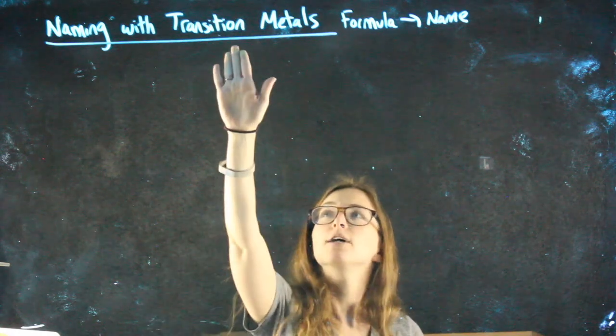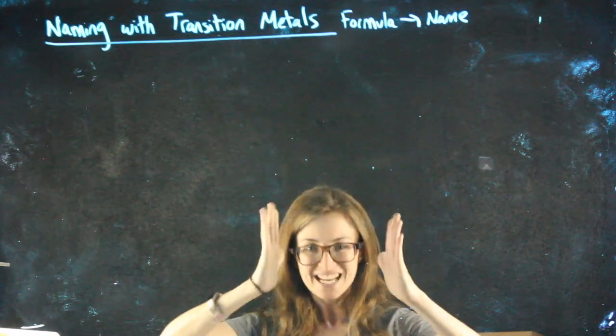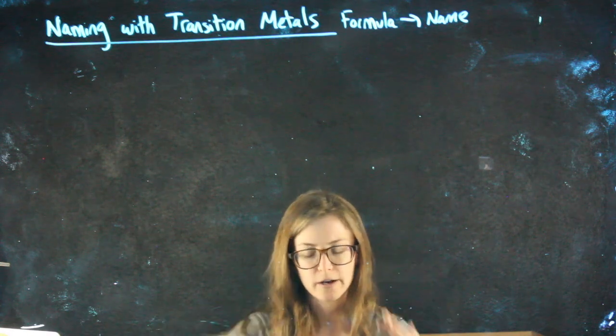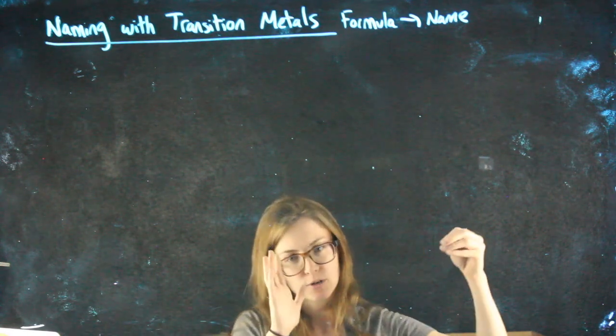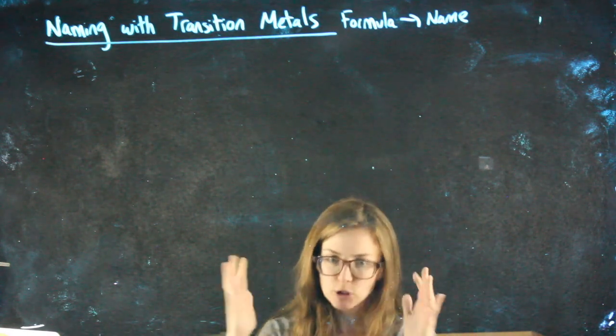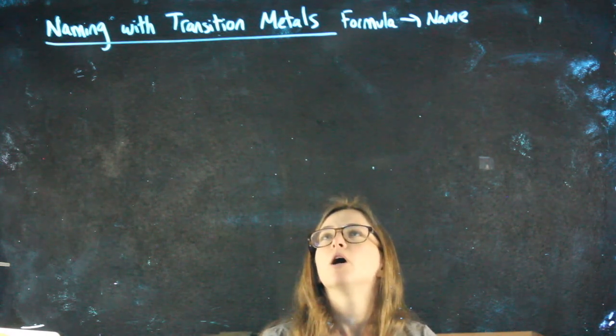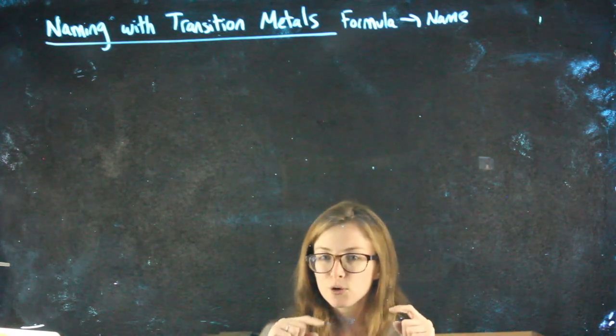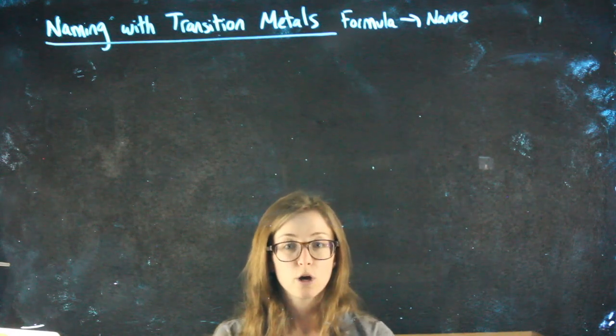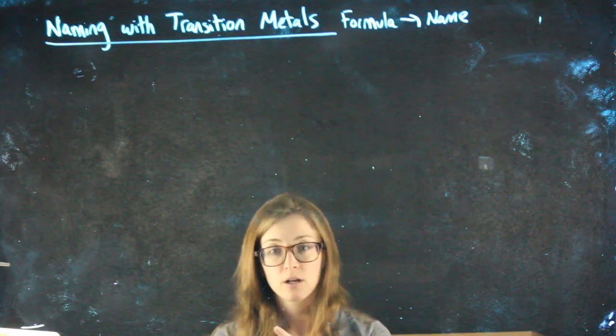Okay, so quick reminder: transition metals are in that central block on the periodic table and they go a little bit over to the right as well, but most of the time we're just working with ones in the center. Transition metals, if I give you the name of a compound that had a transition metal in it and you were trying to crisscross and write out its formula, if you look on the periodic table right now, go ahead and look at the transition metals.